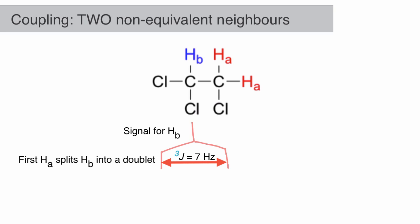What if there were two neighboring atoms with spin? The first HA splits HB into a doublet. The second atom would cause each of the first two signals to split into two again, by the same coupling constant of about 7 Hz.